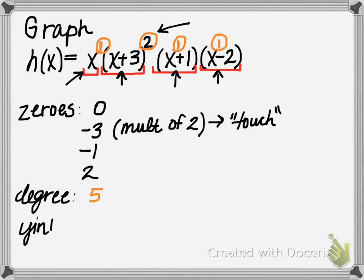Now other useful points on the graph, in addition to the x-intercepts, would be the y-intercept. So remembering that, finding the y-intercept requires us to set x equal to 0. So if we substitute 0 in for x, we'd have something like 0 times 0 plus 3, the quantity squared, times 0 plus 1, times 0 minus 2.